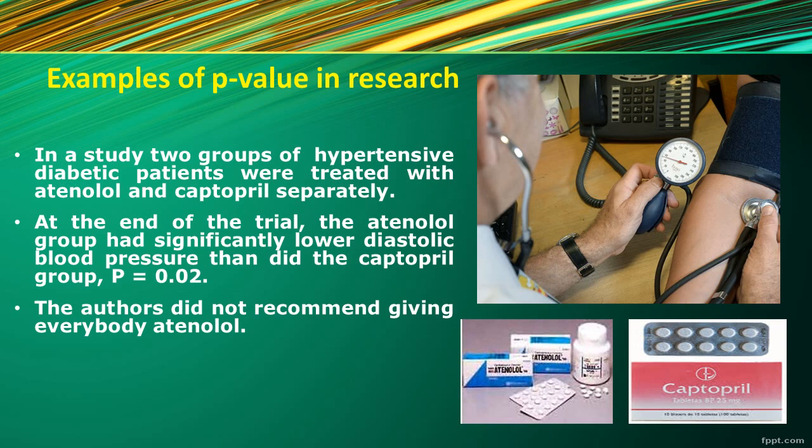Another example: two groups of hypertensive diabetic patients were selected — one intervened with etanolone and the other with captopril. After the intervention, the group who received etanolone had decreased diastolic blood pressure. The p-value was 0.02, which is less than 0.05, meaning there is moderate evidence against the null hypothesis and a significant difference between the two groups. So etanolone is beneficial for hypertensive diabetic patients — the p-value again helped in decision-making.